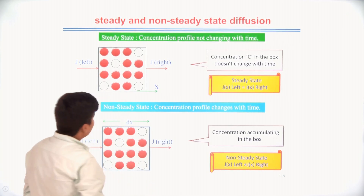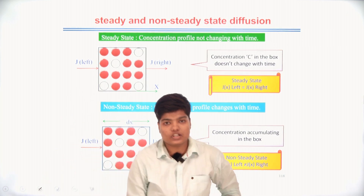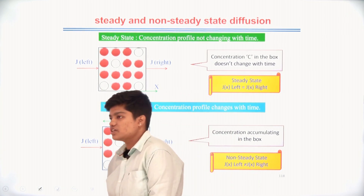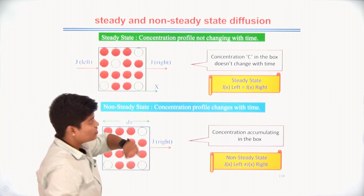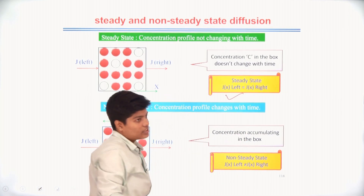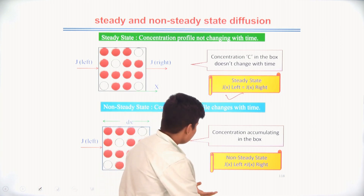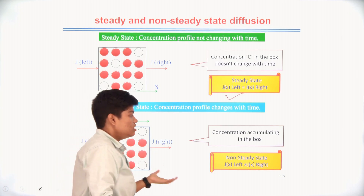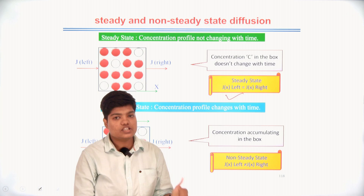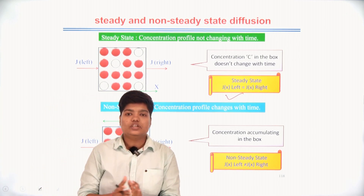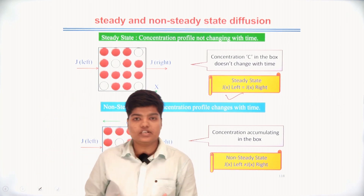In steady state, J is not a function of distance or time. In non-steady state, J varies with time. In steady state, the concentration profile is constant with time — the flux on the left-hand side equals the flux on the right-hand side. In non-steady state, the concentration gradient changes with time, so the flux on the left-hand side is not equal to the flux on the right-hand side. Flux is the net number of atoms flowing per unit cross-sectional area per unit time.